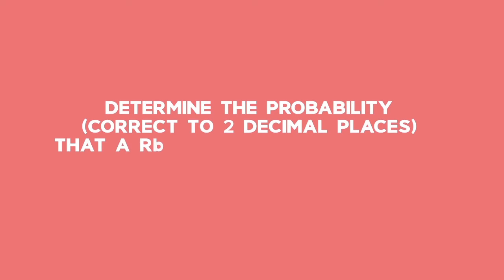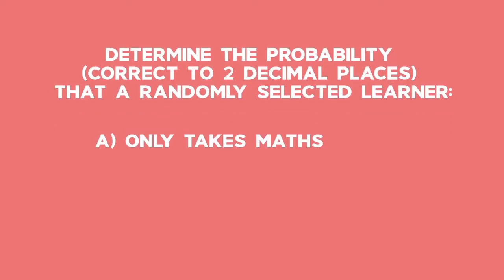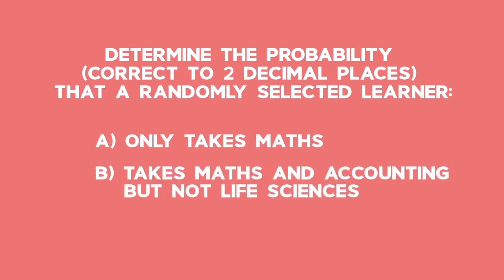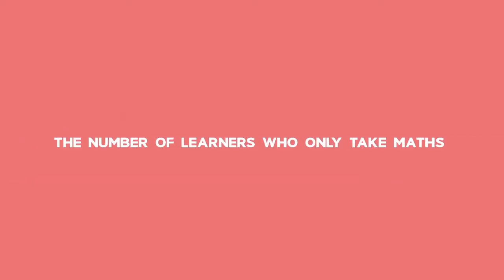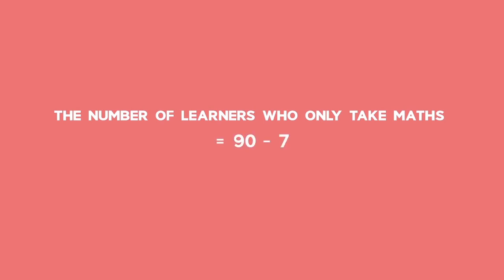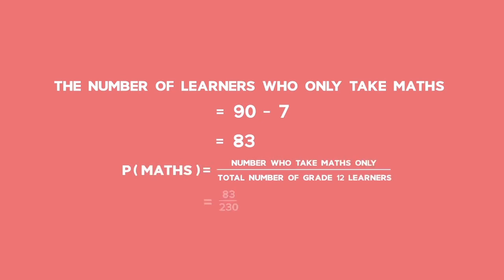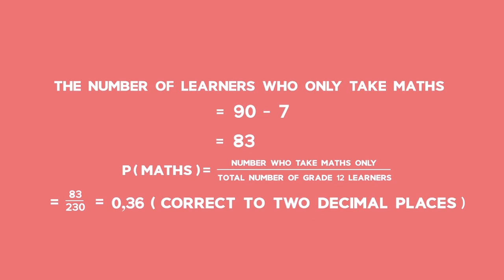For Question 2, we must determine the probability, correct to two decimal places, that a randomly selected learner takes Maths only. The number of learners who only take Maths is 90 minus X, which gives 90 minus 7, or 83. The total number of learners is 230. So the probability that a randomly selected learner takes Maths only is 83 divided by 230, which equals 0.36, correct to two decimal places.